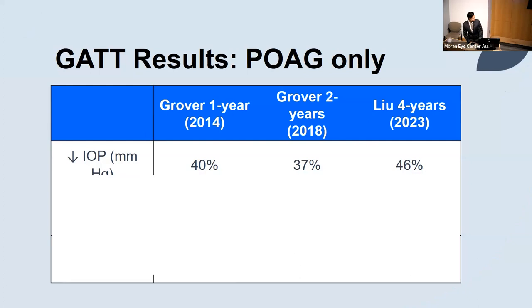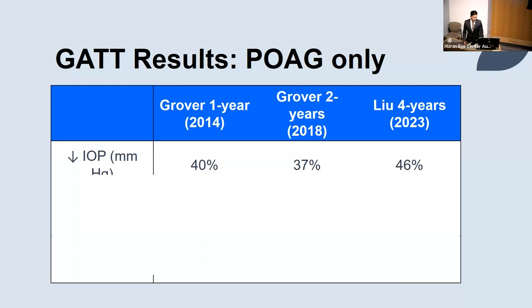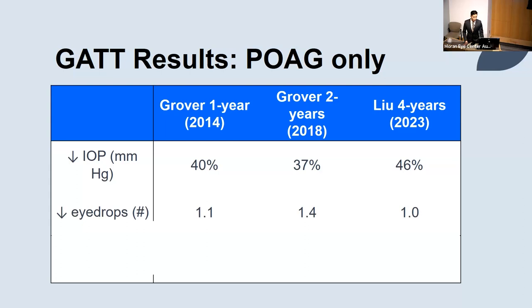The first study from Grover 2014 showed one-year data after the GAT. Grover followed up in 2018 with two-year data, and the newest study by Liu, published earlier this year, showed four-year data. For patients where the effect lasted, IOP lowering was about 40% at one year, 37% at two years, and around 46% at four years — remaining pretty consistent. The number of eye drops also decreased: 1.1 at one year, 1.4 at two years, and 1.0 at four years.